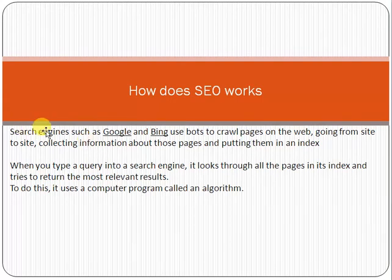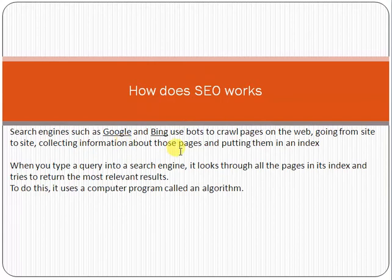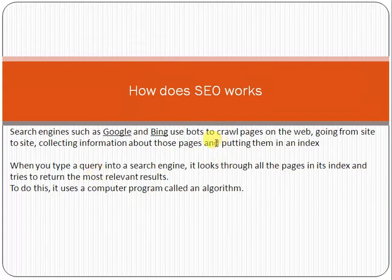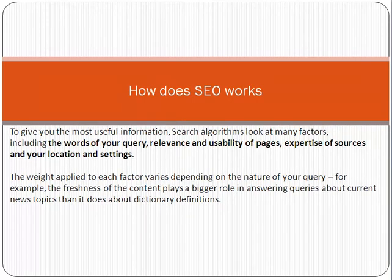Now, how does SEO work? Nowadays, many search engines like Google, Bing, and others use bots to crawl pages on the web — going from site to site, collecting information about those pages and putting them in an index. When you type a query into a search engine, it looks through all the pages in its index and tries to return the most relevant result. This is done by a computer program called an algorithm, which collects all this information from websites to give you the most useful results.